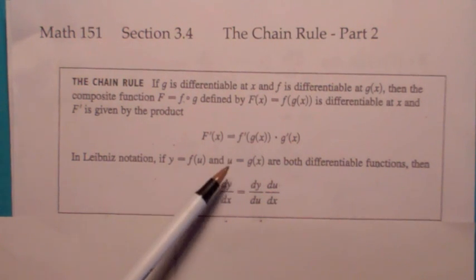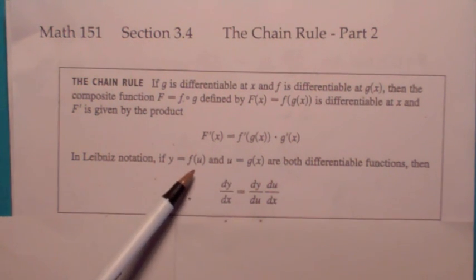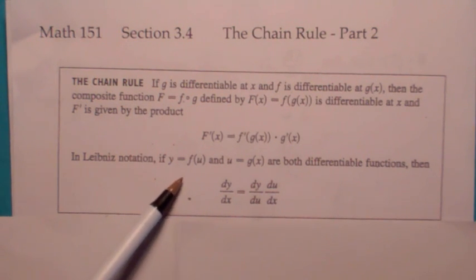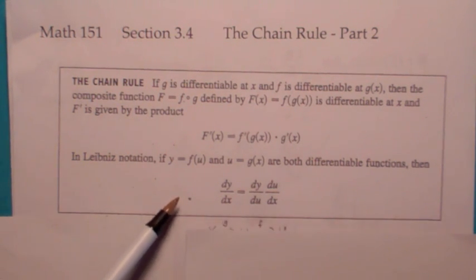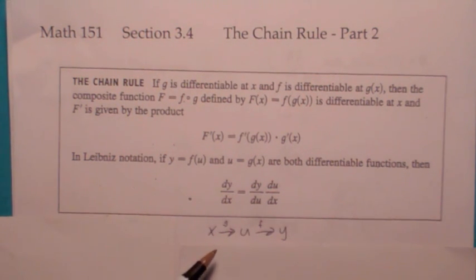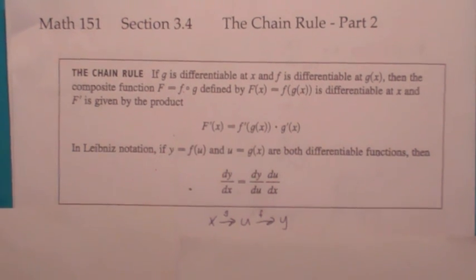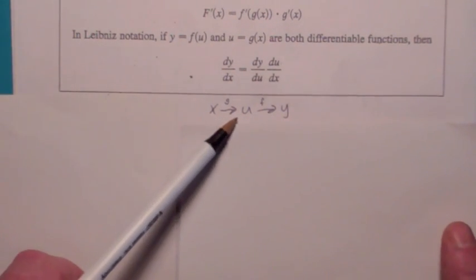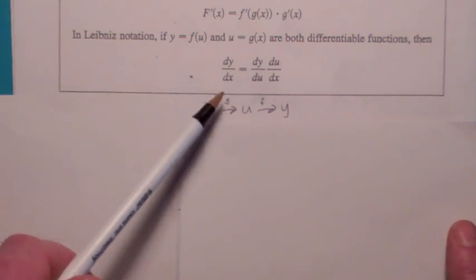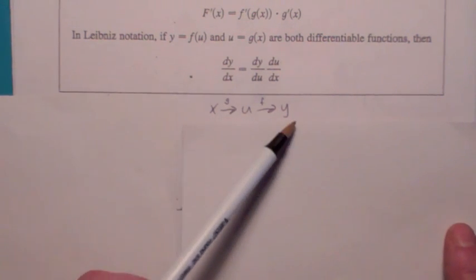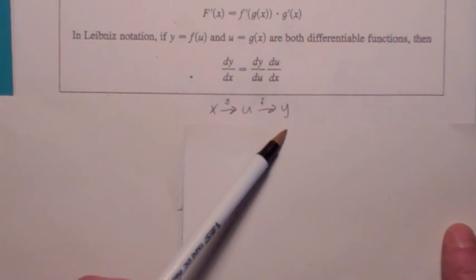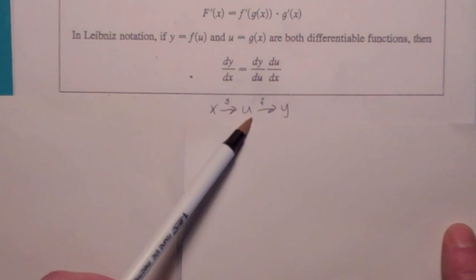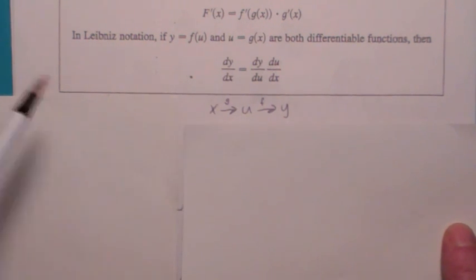Notice here, u is a function of x — u equals g of x — and y is a function of u — y equals f of u. So you can think of the composition written in this way. It actually helps when you're using this version of the chain rule. So x goes to u and u goes to y. The second version of the chain rule says if you want to find the derivative of y with respect to x, you multiply dy/du times du/dx, and that's why it's called the chain rule.